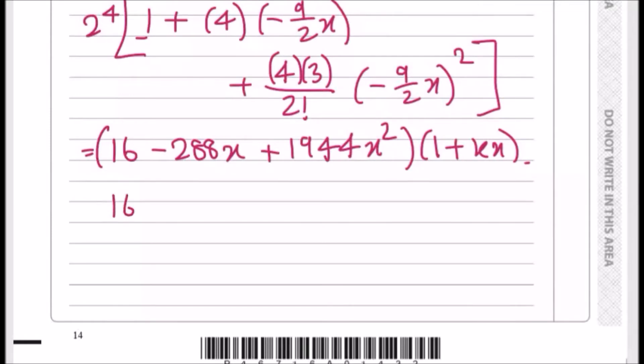Now let's do it. So let's multiply all of this firstly by one, which will give you the same result. It'll give you 16 minus 288x plus 1944x squared. Next we're going to multiply by kx and we're only going to stop after it reaches x squared. So times all this by kx, you're going to get 16kx minus 288kx squared, and that's it.